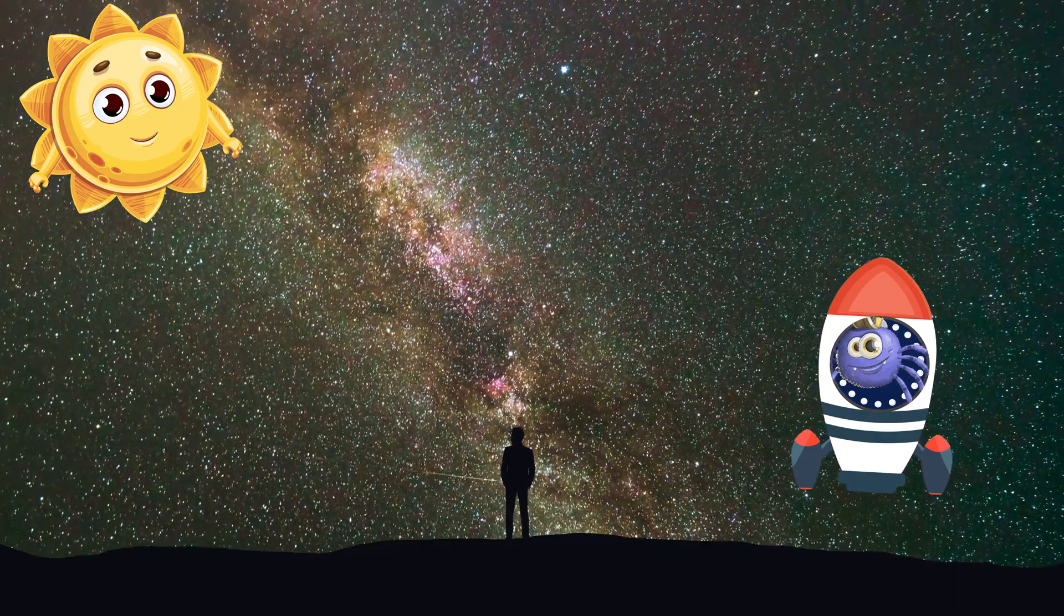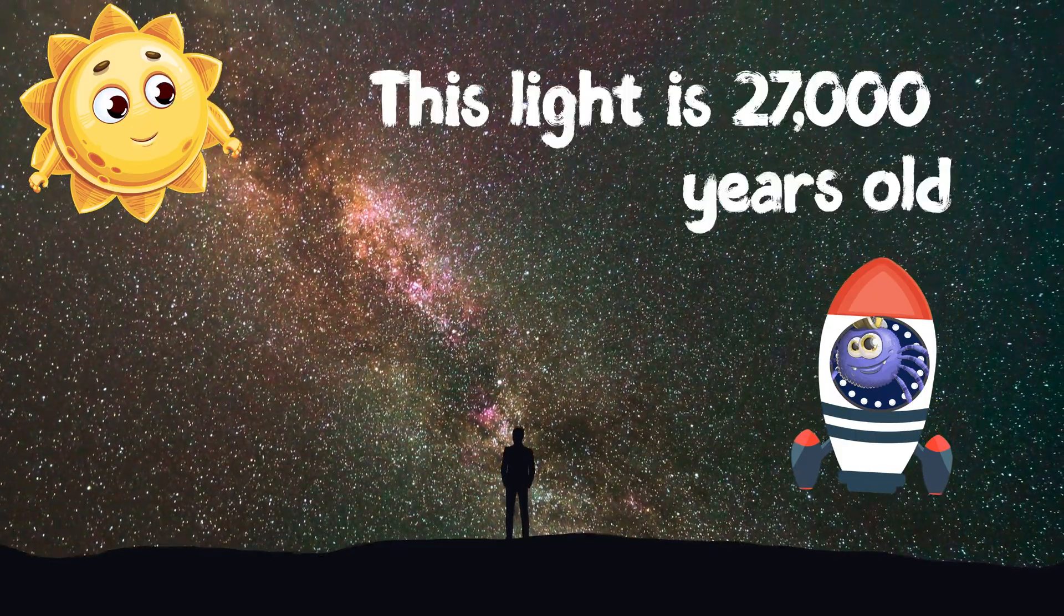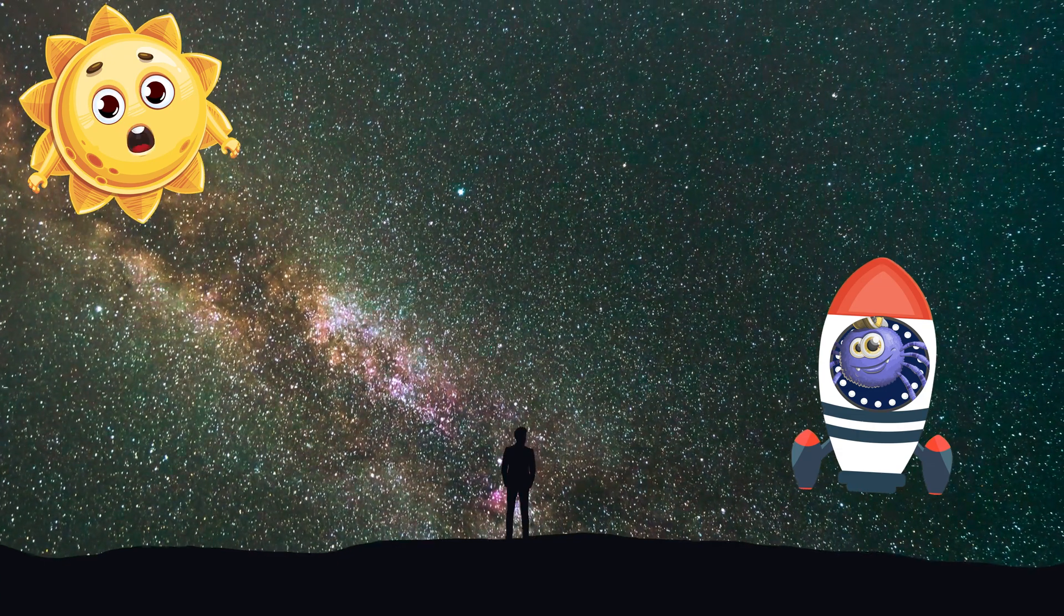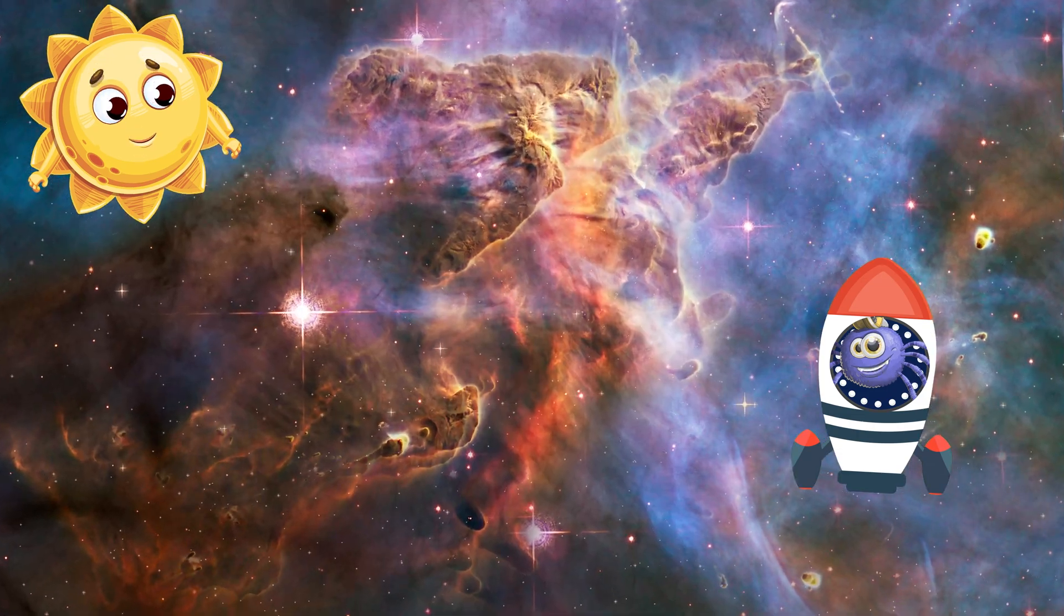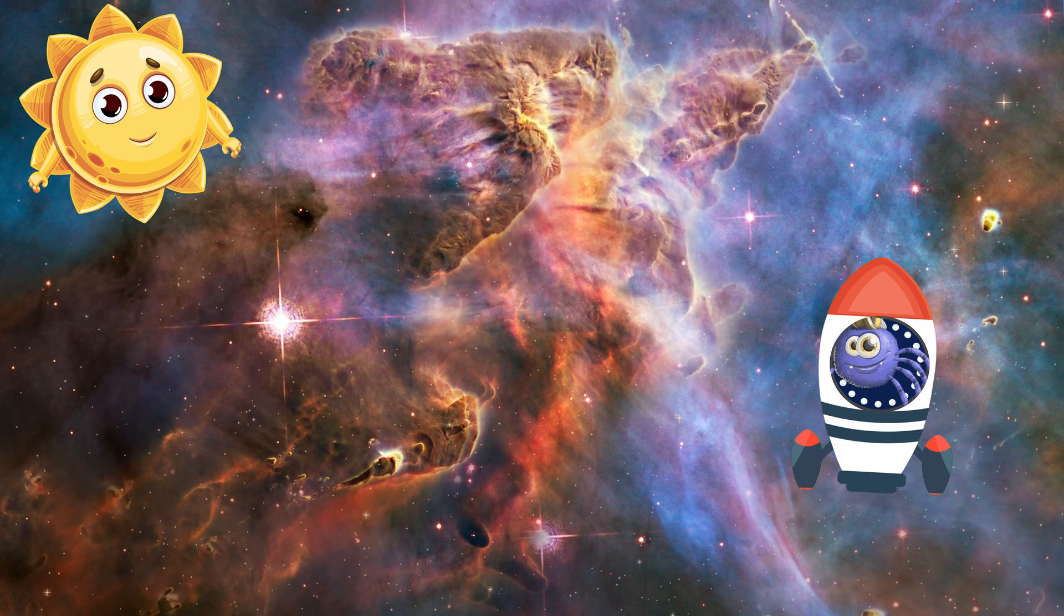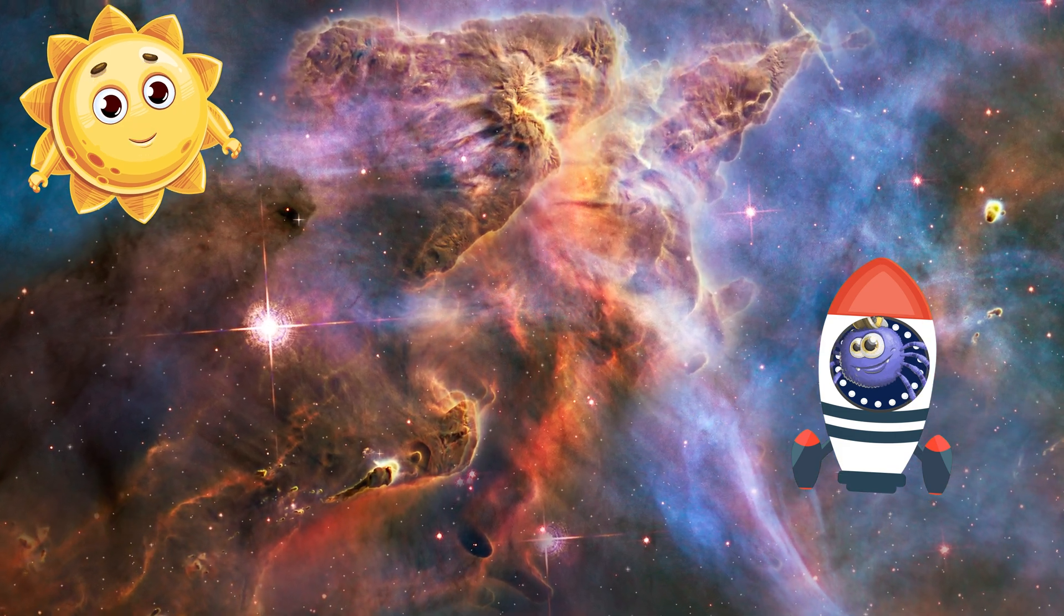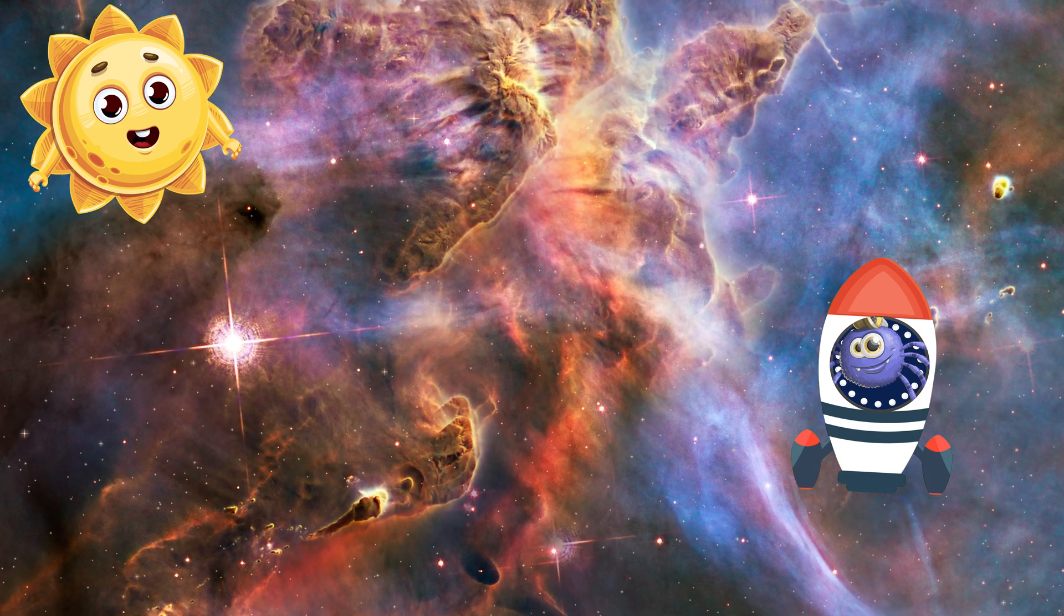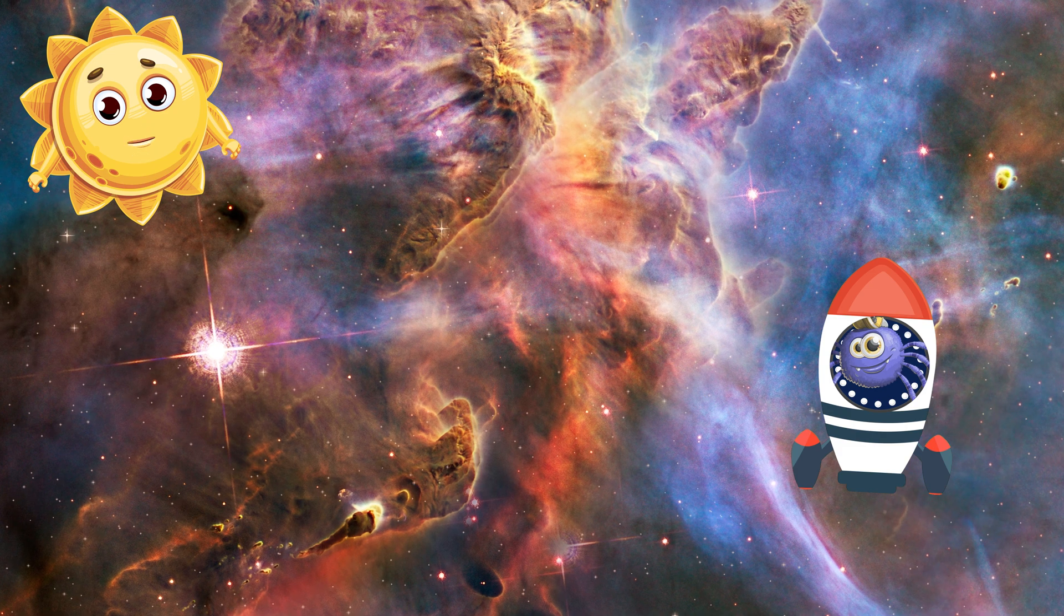When we look at the center of our galaxy, it is like we are looking into the past. We see it as it was 27,000 years ago. So if the light we see is 27,000 years old, how old is the Milky Way galaxy? Our galaxy is very old. It formed about 13.6 billion years ago from a huge cloud of gas and dust that collapsed and started to spin.